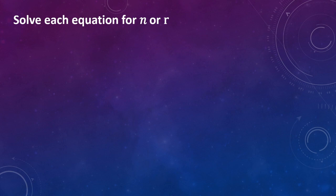Solve each equation for n or r. Number one: permutation of n taken 3 at a time equals 60. So we are going to find the value of n.